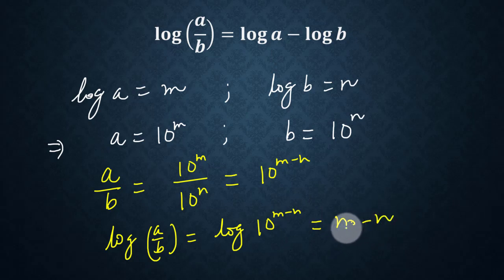Now simply put the value of m, which is equal to log a, and the value of n is log b. So log(a/b) equals log a minus log b.